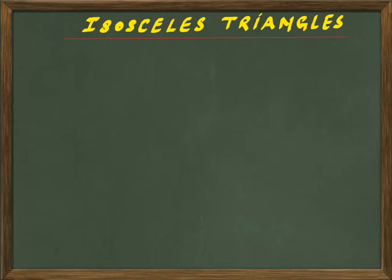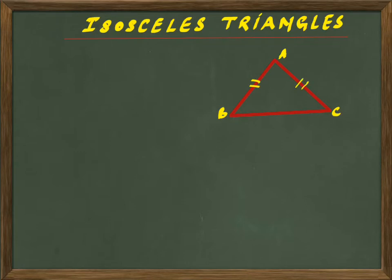I will draw that triangle where we will consider two sides of the triangle that are equal. The vertices are A, B, and C. Here the AB side is equal to the AC side — length of AB is equal to AC. At least this condition should be there: at least two sides of the triangle should be the same.